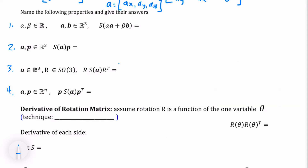The first property: the skew-symmetric of (alpha·a + beta·b) equals alpha times the skew-symmetric of a plus beta times the skew-symmetric of b. This is the property of linearity. The second property: for vectors a and p in R3, S(a) times p equals a cross p. This tells us that skew-symmetry defines a cross product.